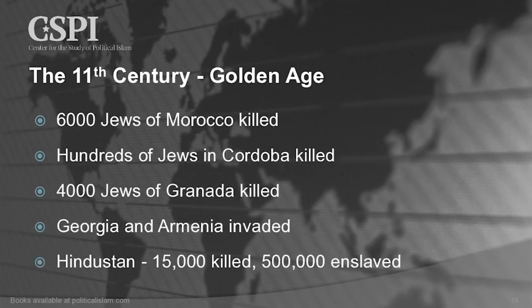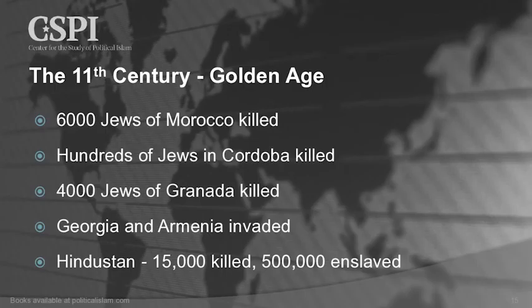Six thousand Jews of Morocco are killed — by the way, we're still in the Golden Age, this is all Golden Age material. Hundreds are killed in Cordoba, and 4,000 Jews in Granada are killed. There is the invasion of Georgia and Armenia, and in Hindustan in one battle, 15,000 were killed and 500,000 were enslaved.